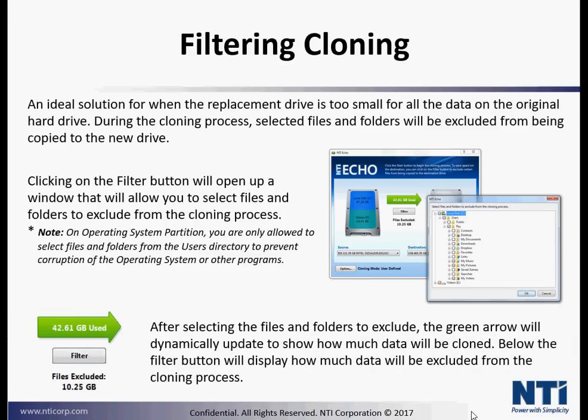After selecting files and folders to exclude, the green arrow will dynamically update to show you how much data will be cloned. Below the filter button will display how much data will be excluded from the cloning process.